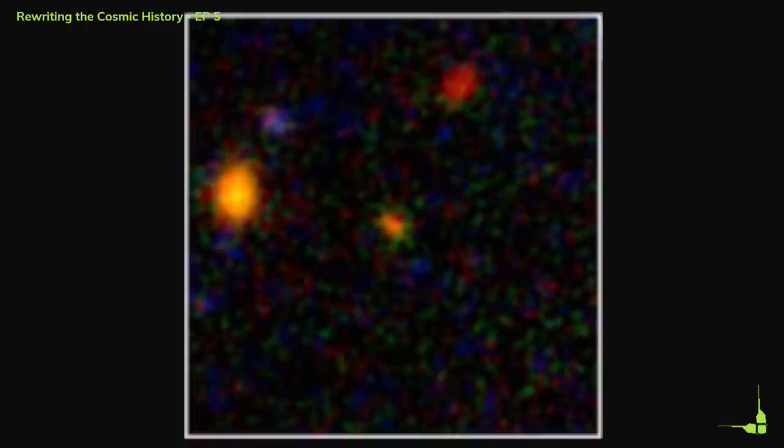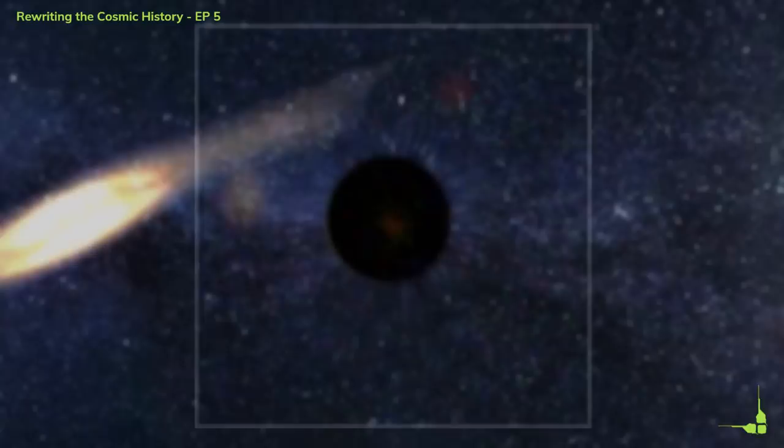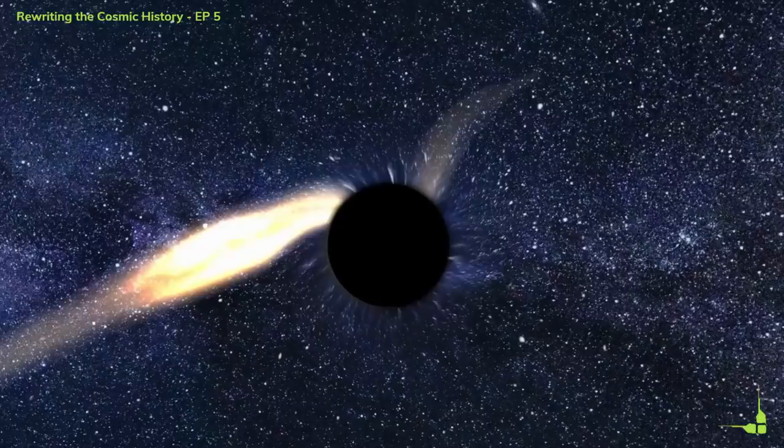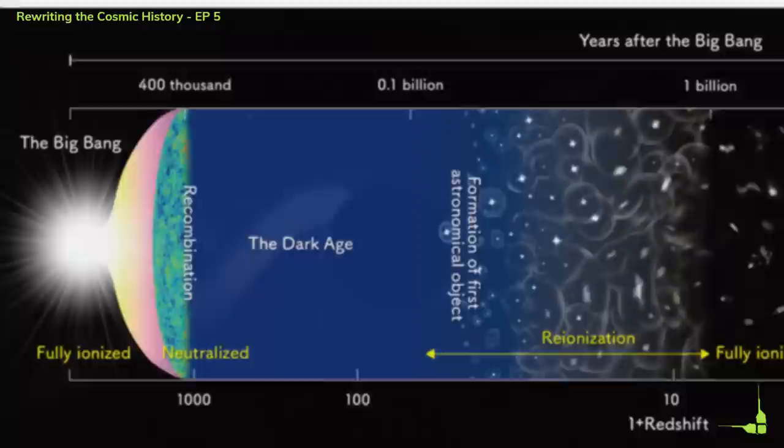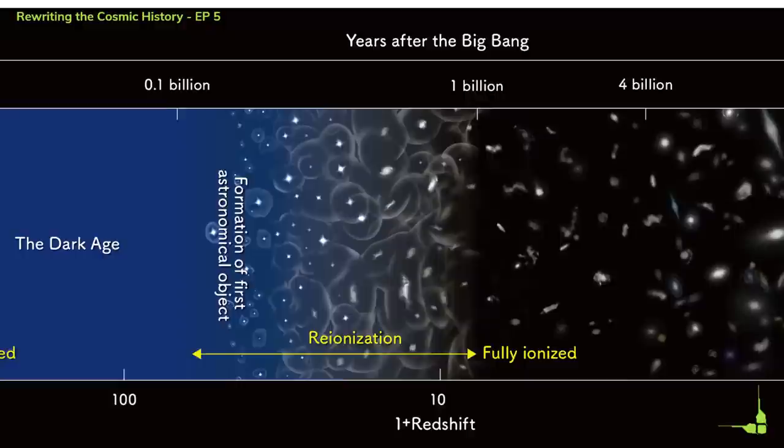They also hope to find more examples of early supermassive black holes and quasars in the universe and compare them with each other and with their counterparts in later epochs. The search for the earliest supermassive black holes and quasars is not only important for understanding their origin and evolution, but also for understanding their impact on the universe.